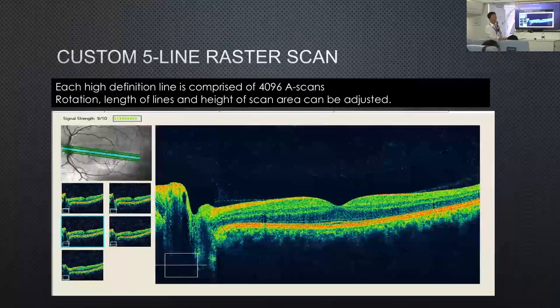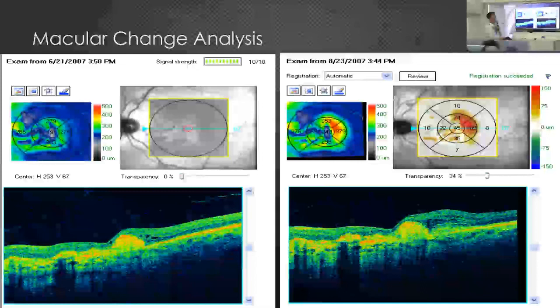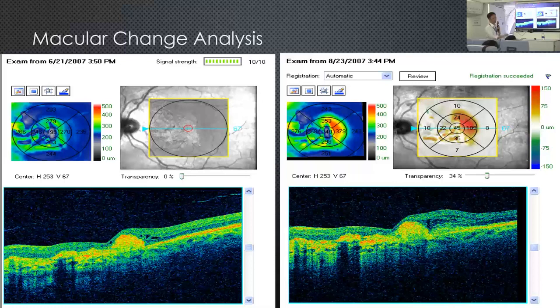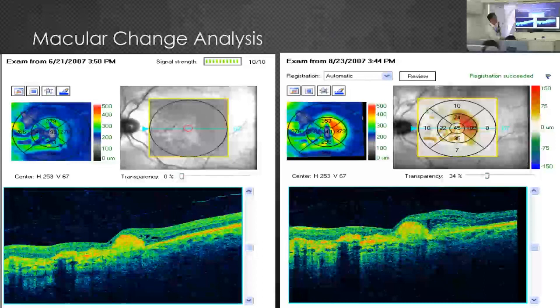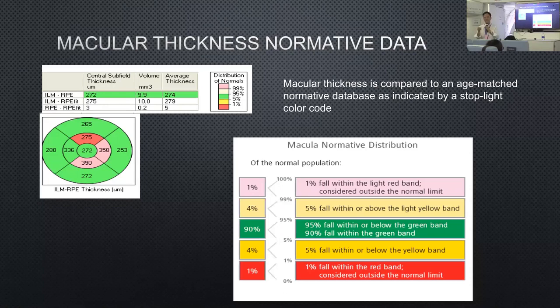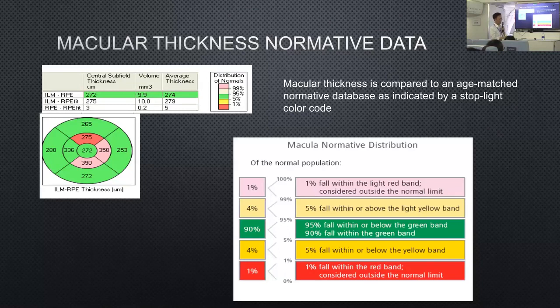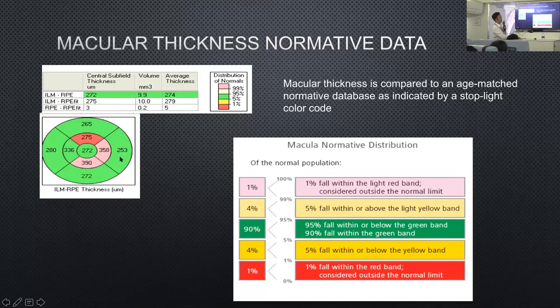There are different features on the OCT machine to allow you to look at images and compare them from time to time. It also has normative values so you can assess whether a certain measurement — such as retinal thickness — is different from the general population, whether it's too thick or too thin. On a map like the maximum map, green is within the normal range and red usually indicates an abnormal measurement.